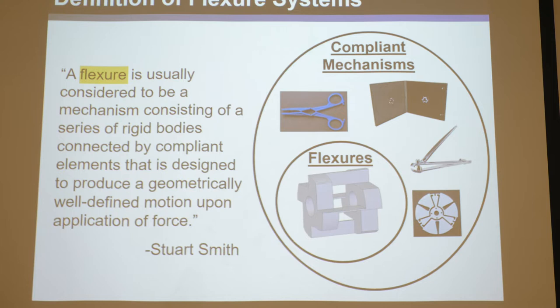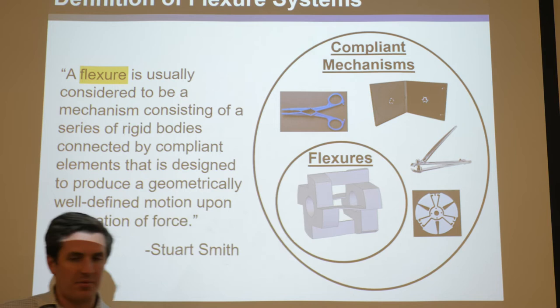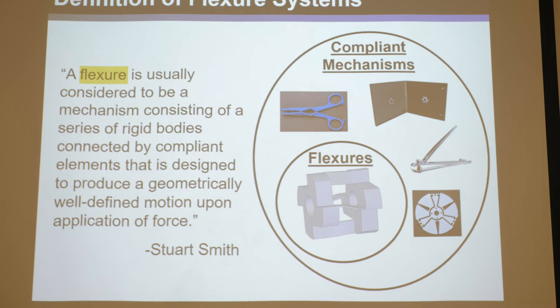You wouldn't consider things like a CD case, nail clippers, a clamp, or a chainsaw clutch to be flexures - they're compliant mechanisms but not flexures. These definitions are a little hand-wavy and people disagree on classification. But if you understand what a flexure is, the clear example is rigid bodies joined by flexible elements that guide motions.